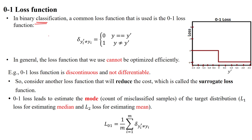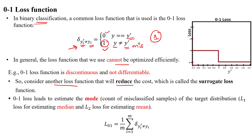The zero-one loss function works for binary class classification. The function gives a difference between predicted and actual output: if they do not match you get one (misclassification), if they match you get zero (correct classification). In general this loss function cannot be optimized efficiently since we only get a scalar value. Therefore we need another loss function that reduces the cost using an optimization method.